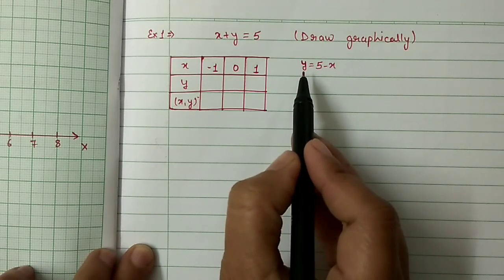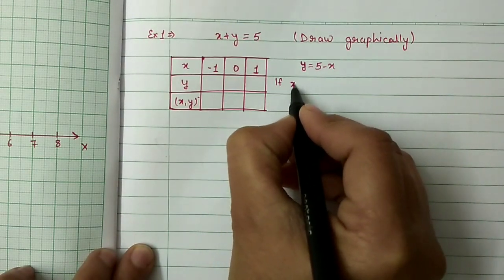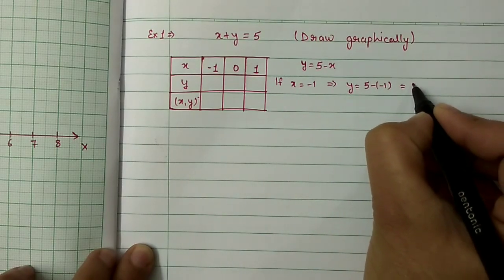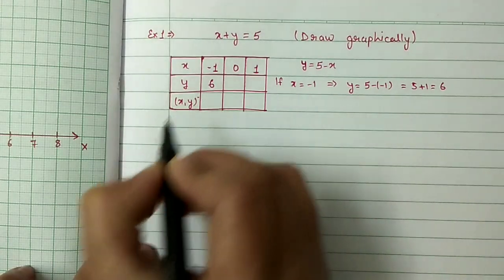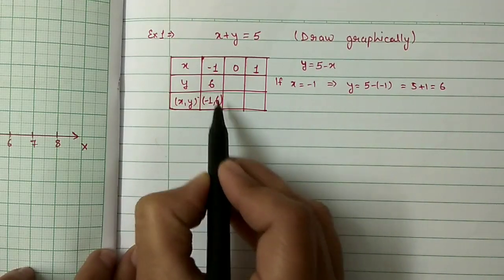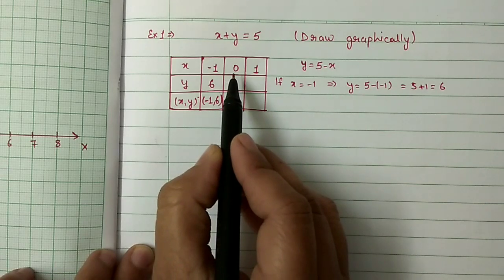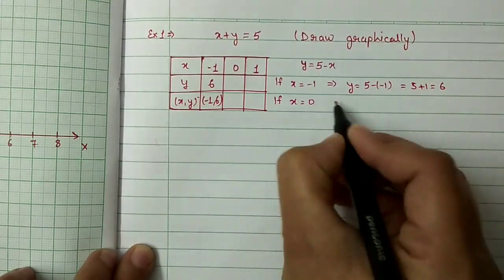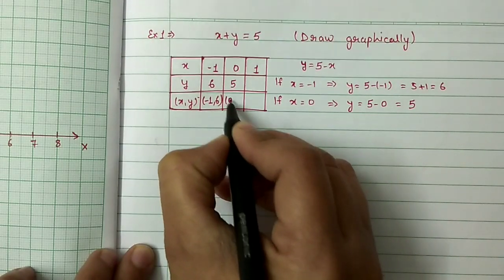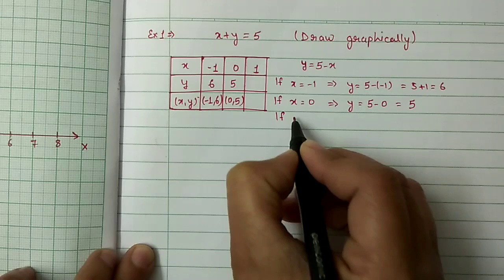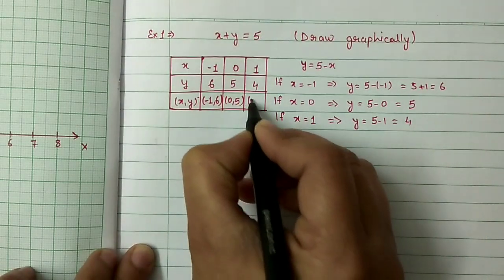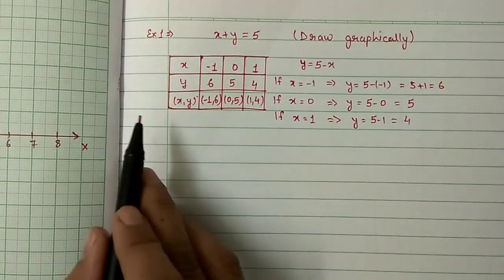If x = -1, then y = 5 - (-1) = 5 + 1 = 6. So the ordered pair is (-1, 6). Always keep x at the first position and y at the second. If x = 0, then y = 5 - 0 = 5, giving ordered pair (0, 5). If x = 1, then y = 5 - 1 = 4, giving ordered pair (1, 4).